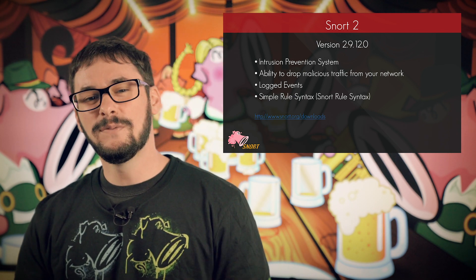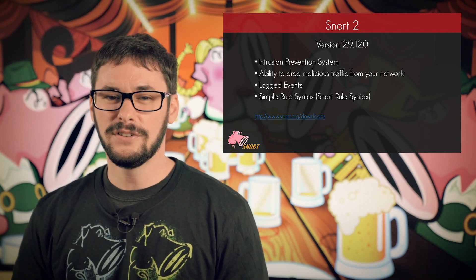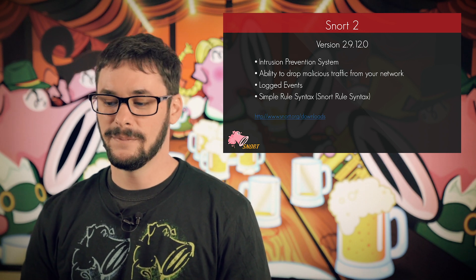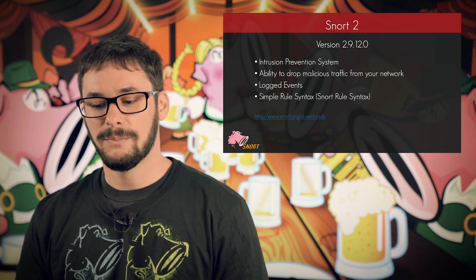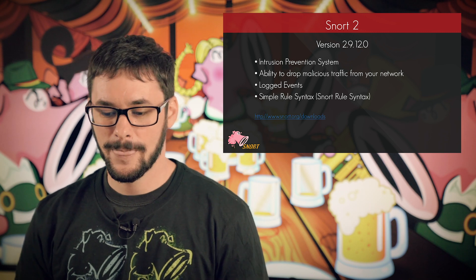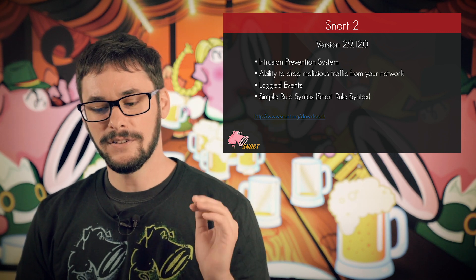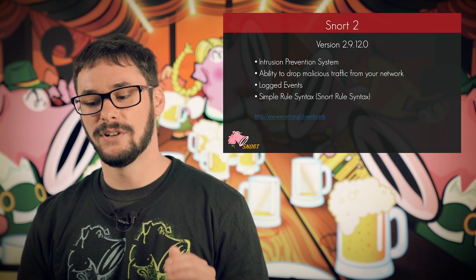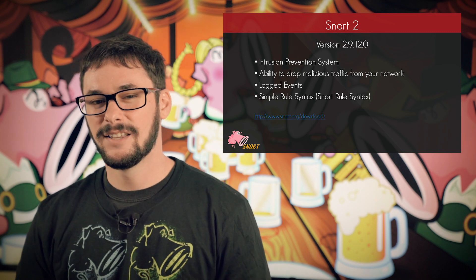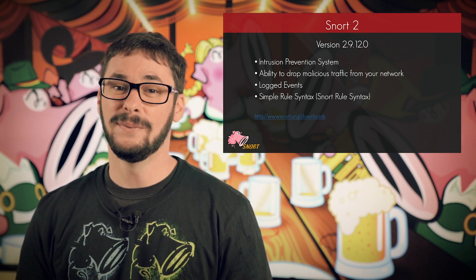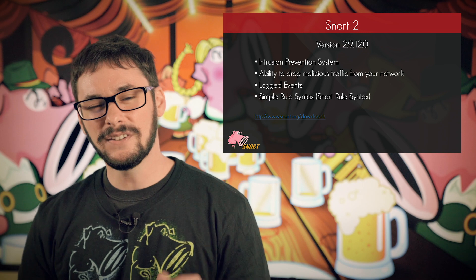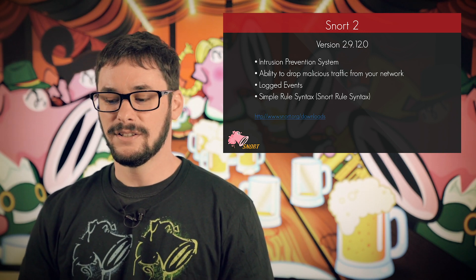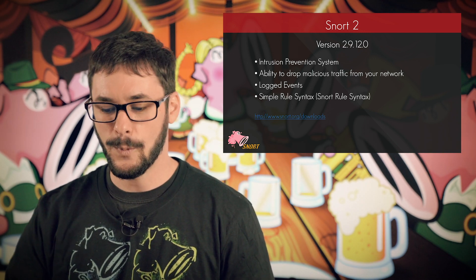There are two versions of Snort currently: Snort 2 and Snort 3, which is still in beta at the moment. We are going to go over both, but I would like to start with Snort 2. Snort 2.9.12.0 is the latest release and the current supported version of Snort. It is by far the most commonly used among enthusiasts. When using Snort, we always recommend installing the newest version to receive the best experience possible.